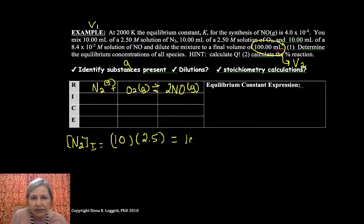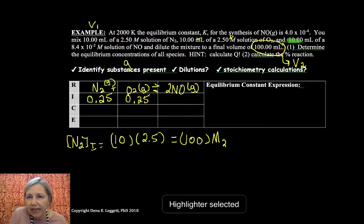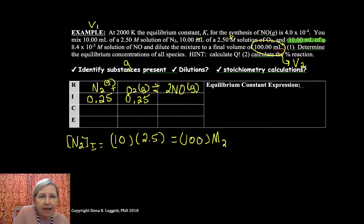So we've got volumes going to volumes. So now my N2 initial is 10 times 2.5, and my final volume once I mix them up and put them in the final container was 100 times my new volume. And notice I have the same values for oxygen. These end up both being 0.25 molar.